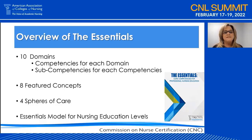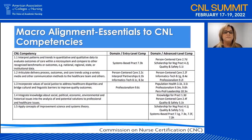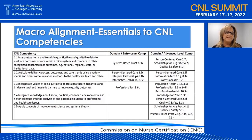The competencies in each domain are designed to be applicable across four spheres of care. The first is disease prevention and promotion of health and well-being. Another sphere is chronic disease care, while another is regenerative and restorative care. The last sphere is hospice, palliative care, and supportive care, and all of these are incorporated across the lifespan with diverse patient populations.